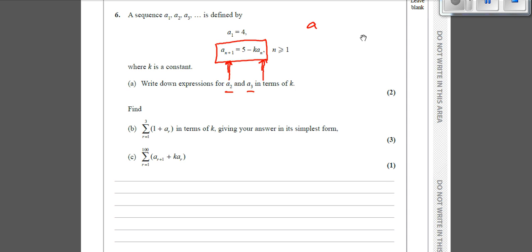So if we're looking for a2, we're going to say this one is a2, then this one here must be the term before it. So it's going to be 5 take away k lots of a1. And we know that a1 is 4, so it's going to be k times by 4. So a2, if we tidy that up, is 5 minus 4k.